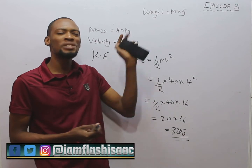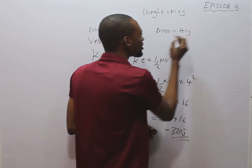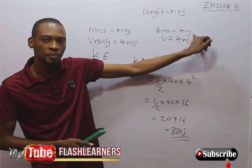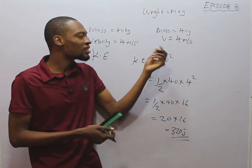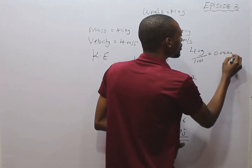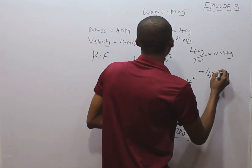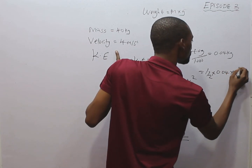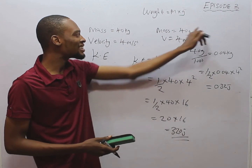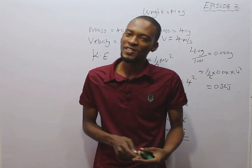When calculating kinetic energy, your mass must be in kilograms, not grams. If the question had said mass is 40 grams, you must convert to kilograms first by dividing by 1000: 40 ÷ 1000 = 0.04 kg. Then KE = ½ × 0.04 × 4² = 0.32 joules. Always convert grams to kilograms before substituting into the formula.